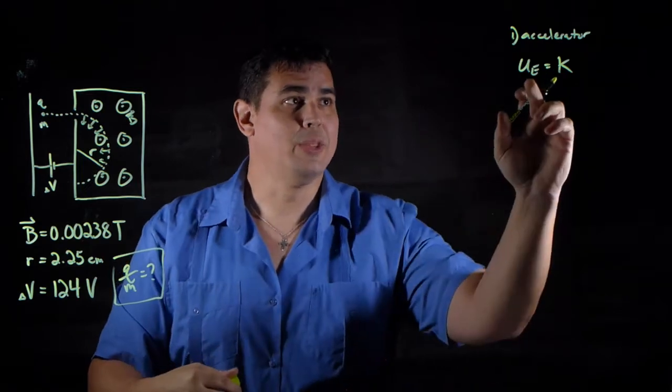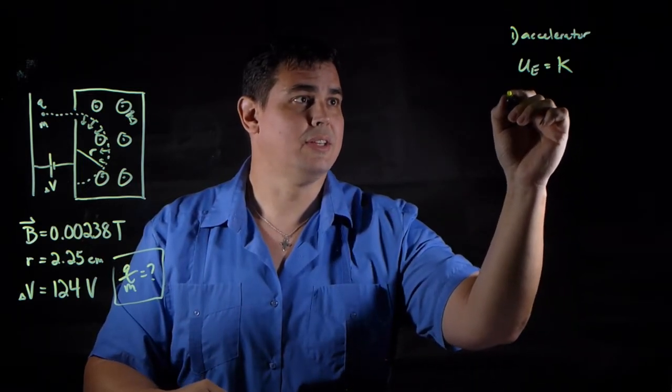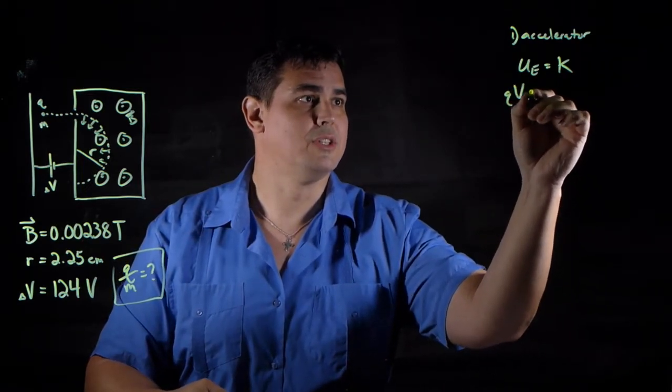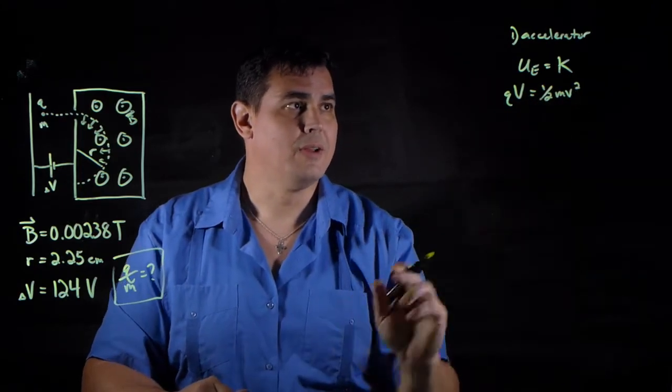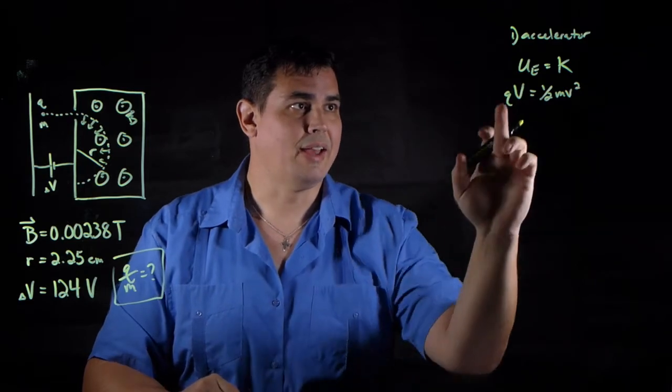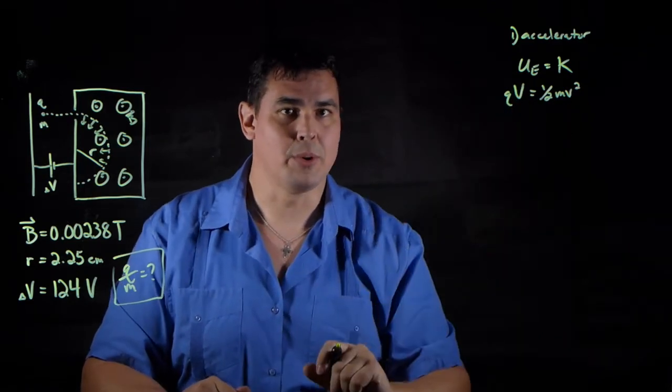I can set those two equal. If I substitute in, I know that electrical energy is charge times voltage, and kinetic energy is one-half mv squared. So I take this equation, and I have qV equals one-half mv squared.